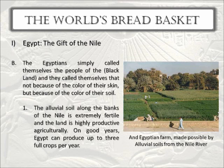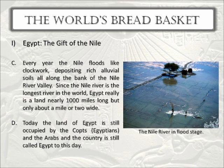This agricultural output is unheard of in most places in the world, even today, including the United States, which has a comparatively short growing season. Egypt's growing season lasts pretty much all year except when the Nile is in flood stage. You may be asking why Egypt is so special — after all, Mesopotamia also had rich alluvial soils from the Tigris and Euphrates. The answer is that the Nile River is consistent.